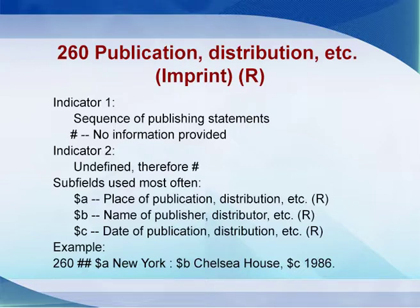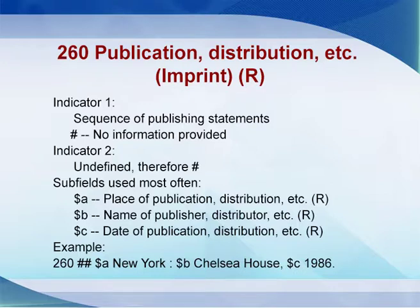For the 260 publication and distribution area: both indicator positions are undefined. It has three basic subfields — subfield $a for place of publication, subfield $b for name of publisher, and subfield $c for date of publication. For example, subfield $a is 'New York' followed by a colon. Note the use of punctuation and spacing: there are spaces before and after the colon, but no space before or after commas and dots.